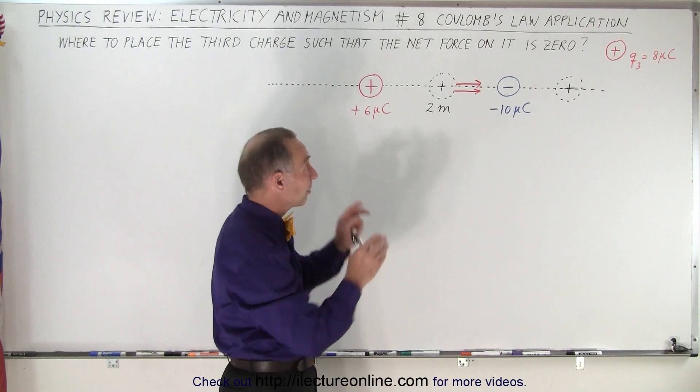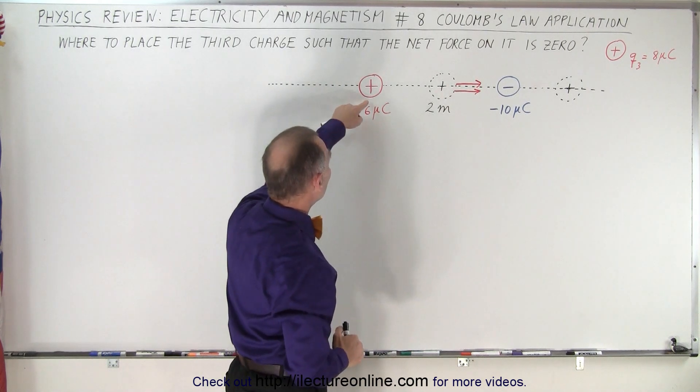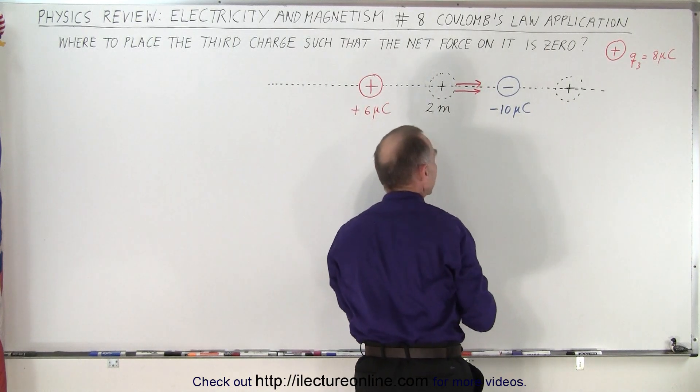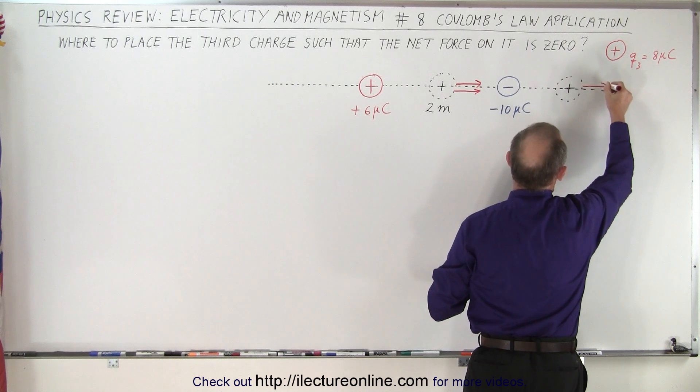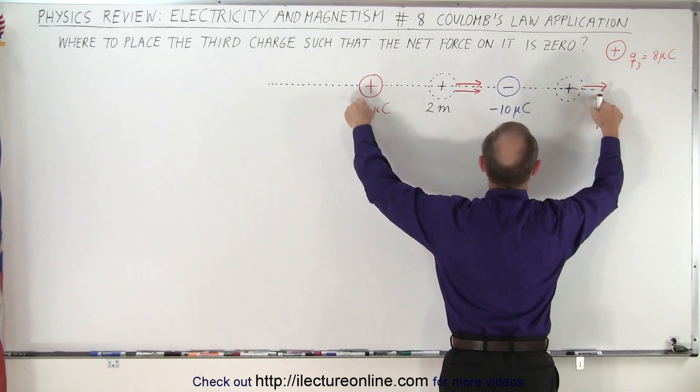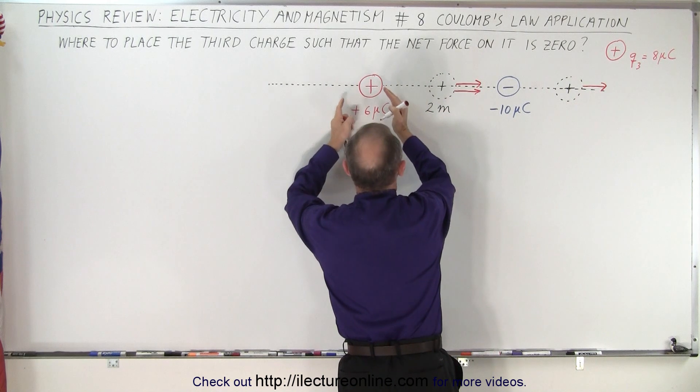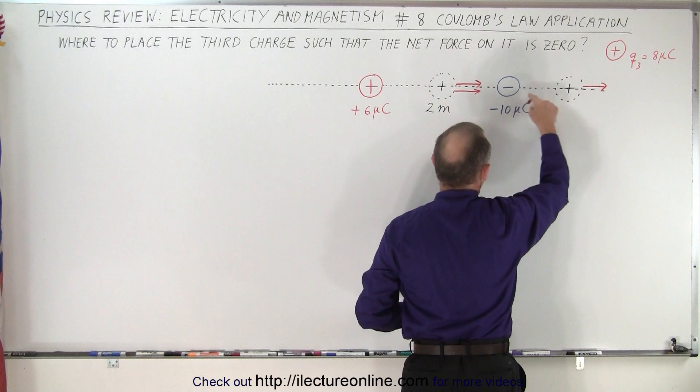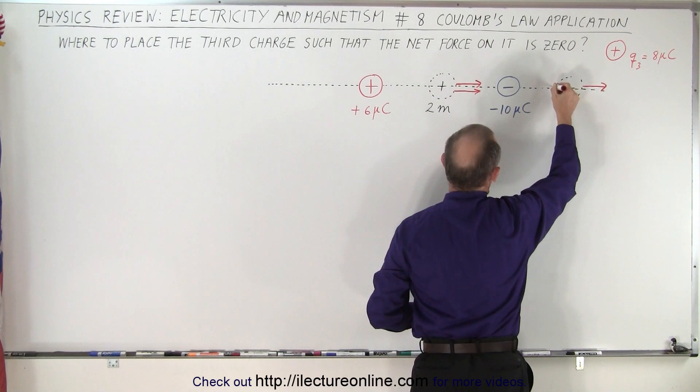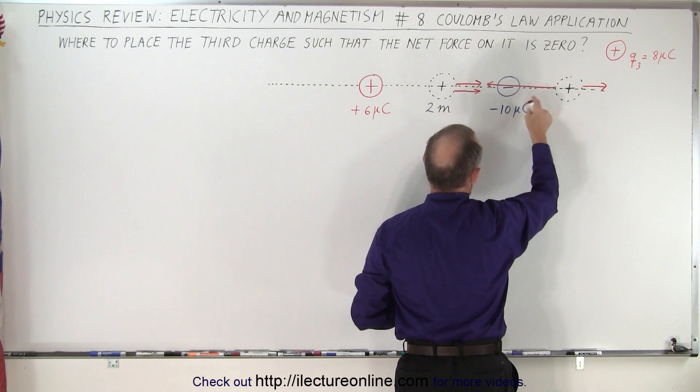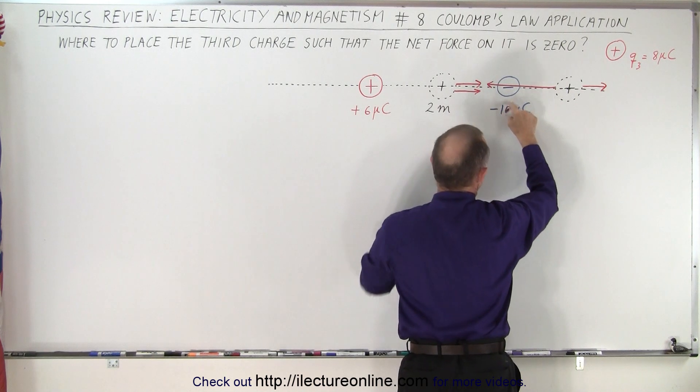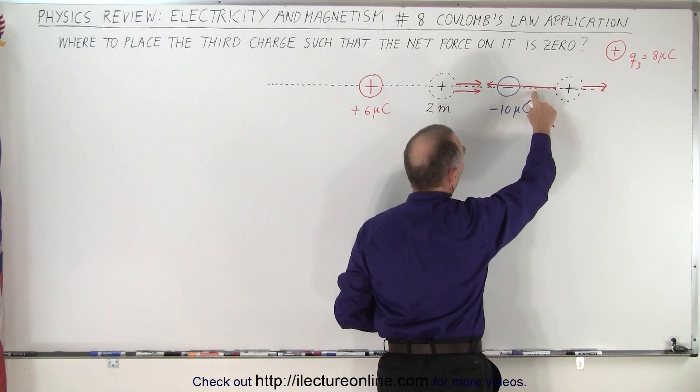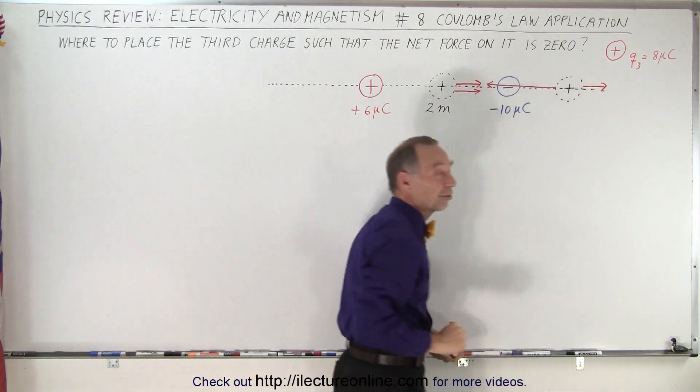So if we now place that third charge to the right, notice that between these two charges, there will be a force of repulsion. So the force over here will be to the right, but it'll be a small force because they're far apart and this charge is smaller in magnitude than this charge. On the other hand, there'll be a force of attraction between these two. And you can see then that there'll be a large force in this direction because it's a large negative charge and they're very close together. So therefore, you can see that this force will always be larger than this force so they will never be able to add up to zero.